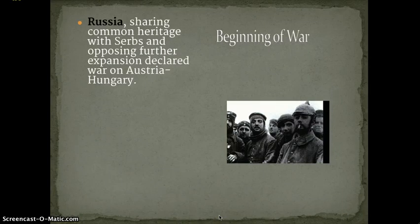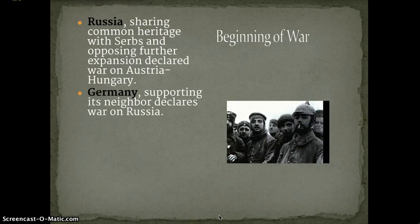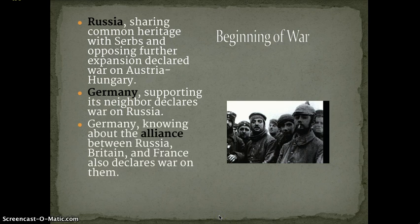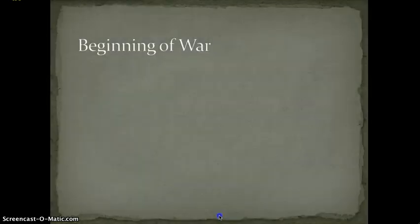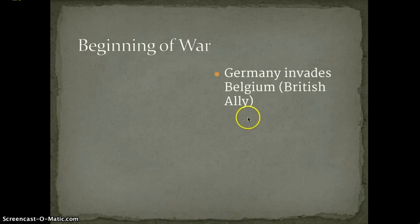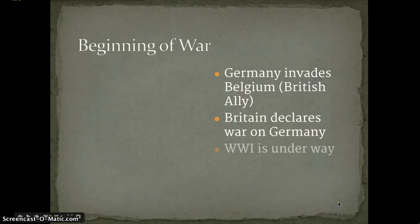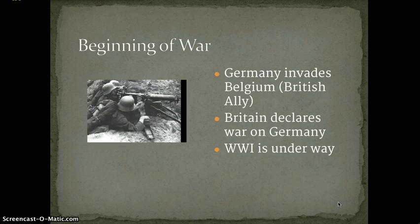Russia, who shares a common heritage and similar language with the Serbians, opposed further expansion and declared war on Austria-Hungary. Germany, supporting its neighbor Austria-Hungary, declared war on Russia. Germany, knowing about the alliance between Russia and Britain, also declared war on France and Britain, and France also declared war on them. It's like everybody all of a sudden is in a big brawl. Germany invades Belgium, which was a British ally. Britain declares war on Germany. Everybody in the world, except for the United States, who tried to stay neutral, was in the middle of a big, bloody war.